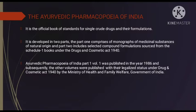The Ayurvedic Pharmacopoeia of India is the official book of standards for Ayurvedic single crude drugs and formulations, published by the Ministry of Health and Family Welfare, Government of India. There are two parts of the API: Part 1 and Part 2. Part 1 contains monographs of single drugs, and Part 2 contains standards of compound formulations.